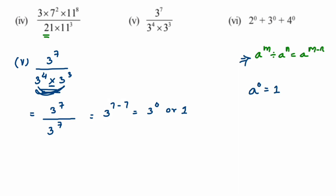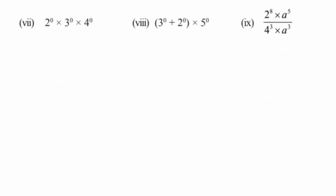Sixth question: we apply the same law — a to the power 0 equals 1. We have 2 to the power 0 plus 3 to the power 0 plus 3 to the power 0 plus 4 to the power 0. Any number to the power 0 equals 1, so this becomes 1 plus 1 plus 1, which equals 3.